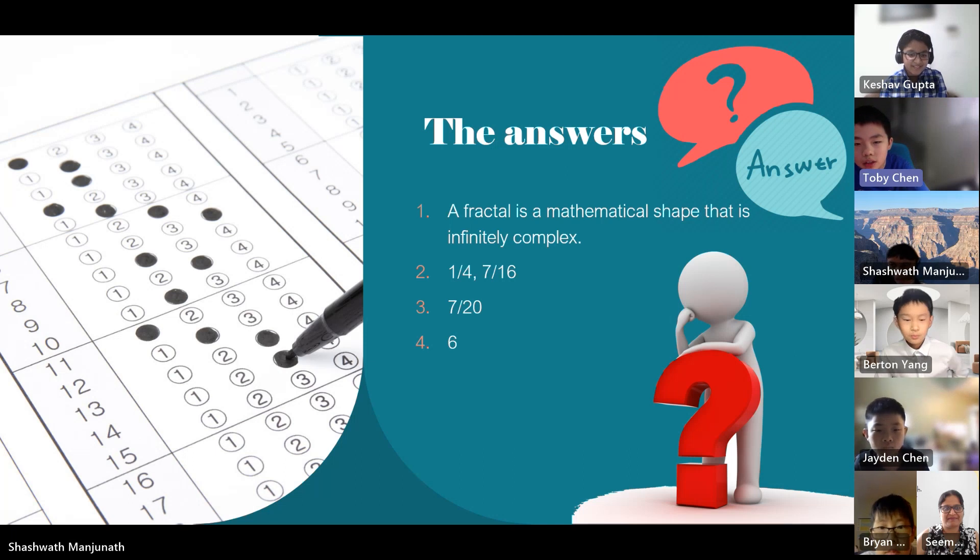Okay, so now let's check with the answer. So for the answers, for the first question, the answer is a fractal is a mathematical shape that is infinitely complex. Now for the second question, the answer is 1 over 4 and 7 over 16. For the third question, the answer is 7 over 20. And for the last question, the answer is 6.